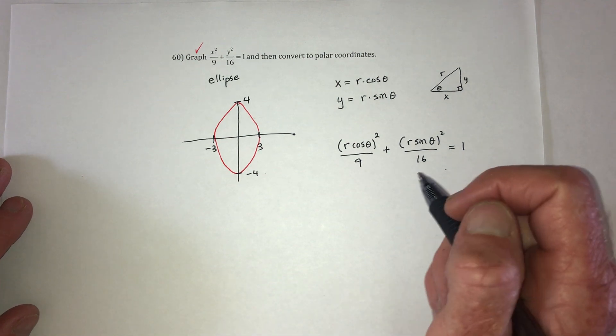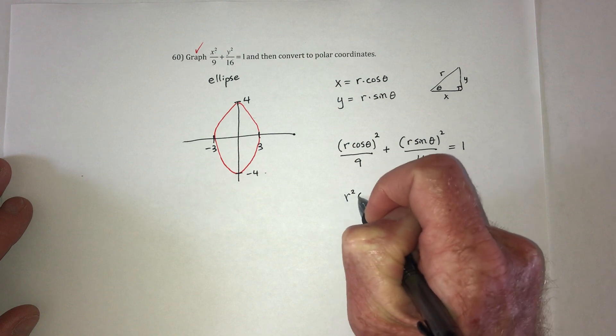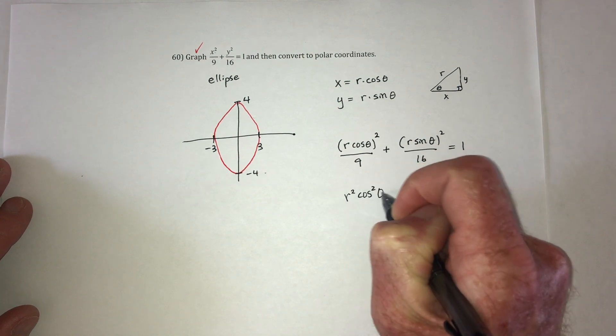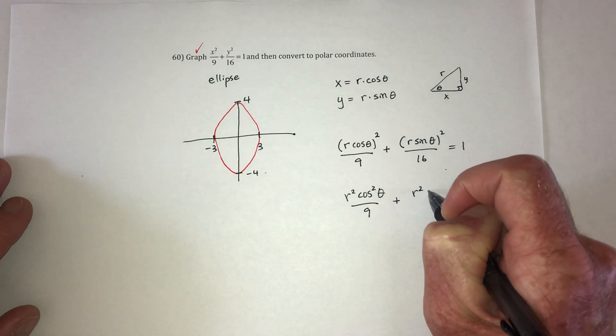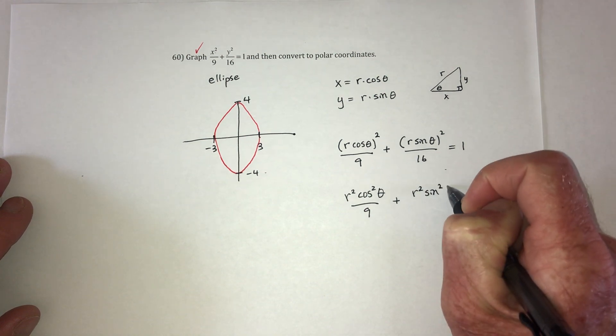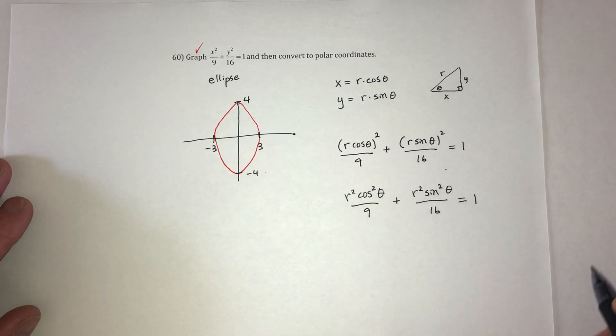Then I should do a little bit of algebra to simplify. So this would be r squared cosine squared over 9 plus r squared sine squared over 16 equals 1.